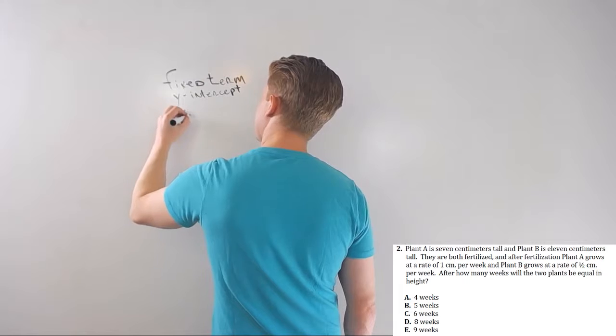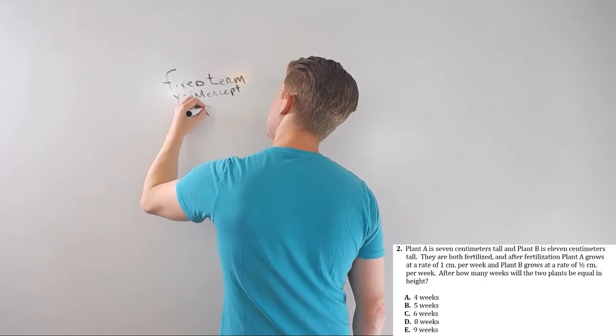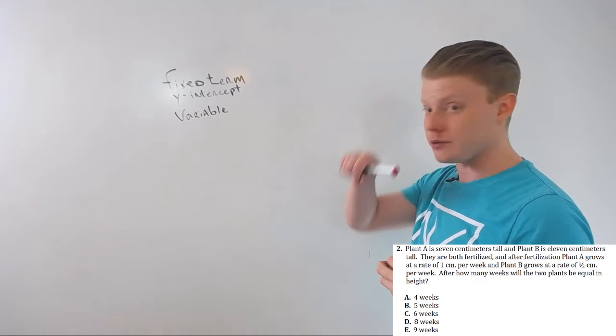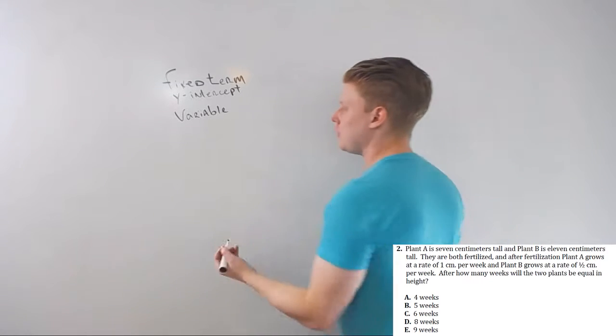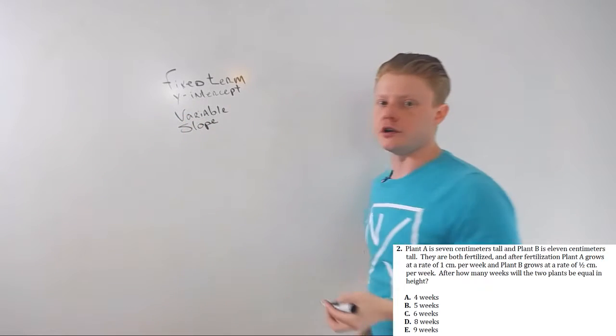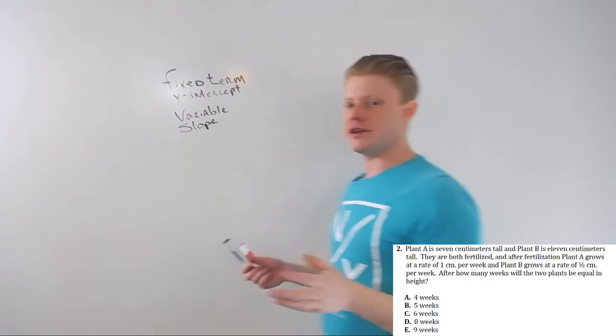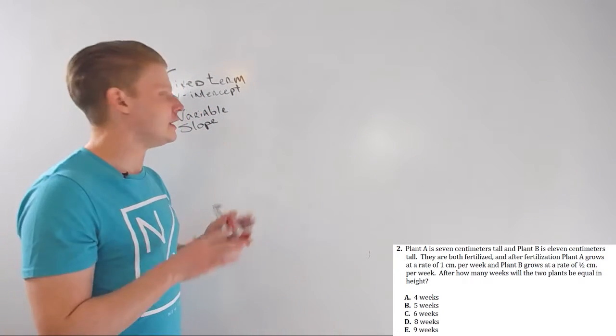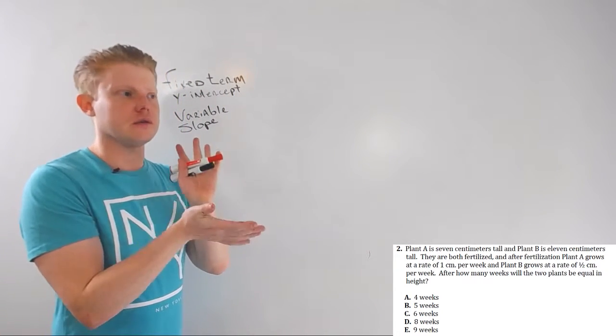And the variable term that changes depending on the amount of time or increments or whatever you're measuring. It's the coefficient, it's the slope, it's the coefficient in front of your variable. That's all it takes to define a line. Check out the line equation videos for more on that, but it's all there is to it.